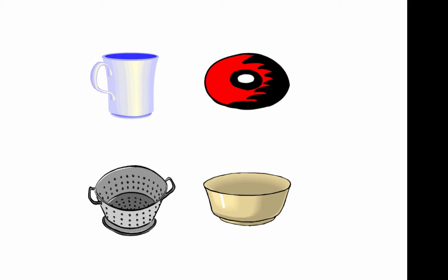The two objects on the top have the same topology and very different geometry. Now think about a doughnut and a coffee mug made out of clay or dough.